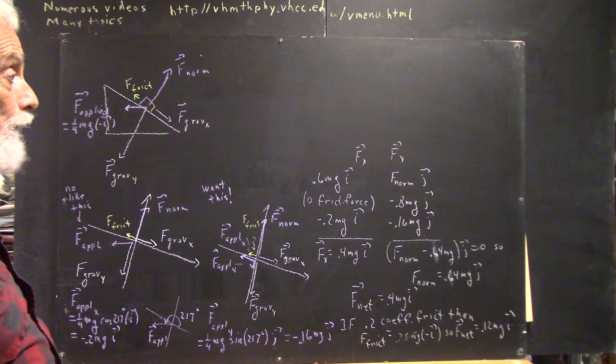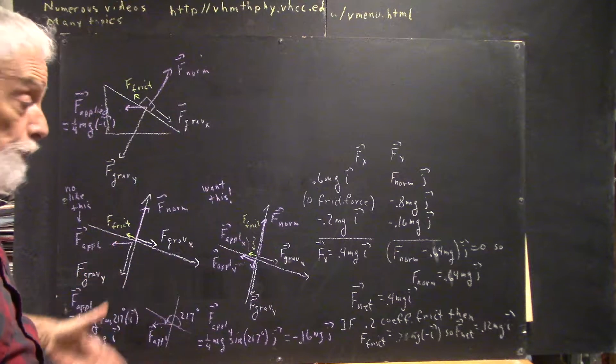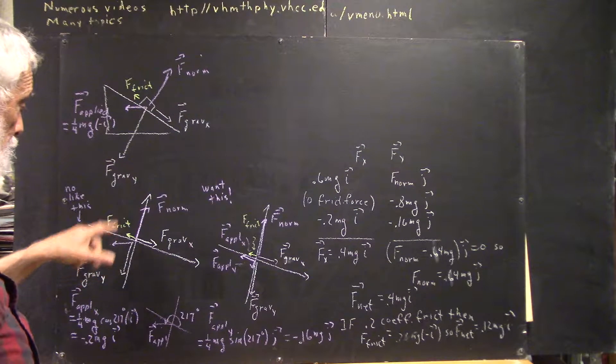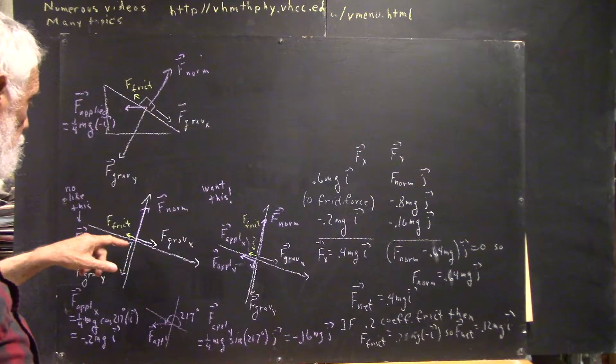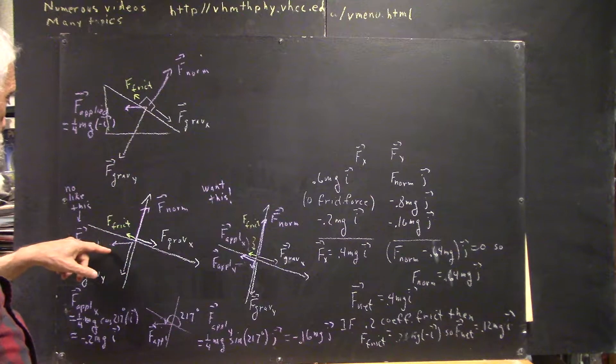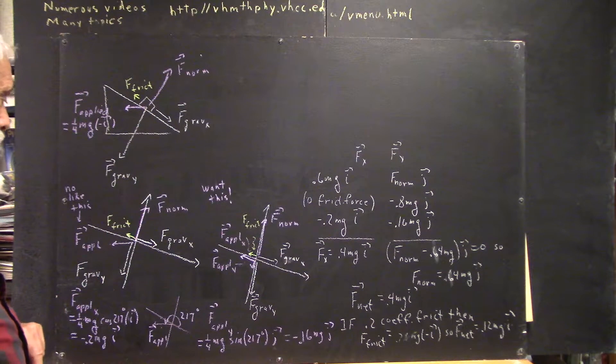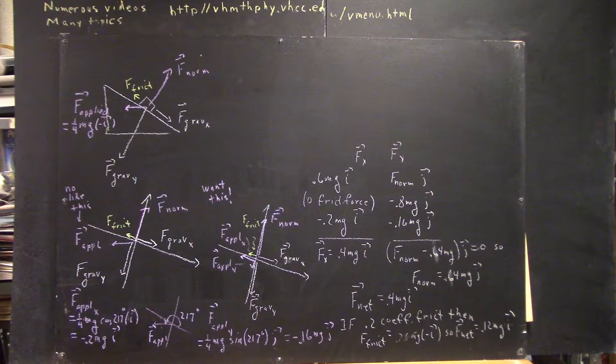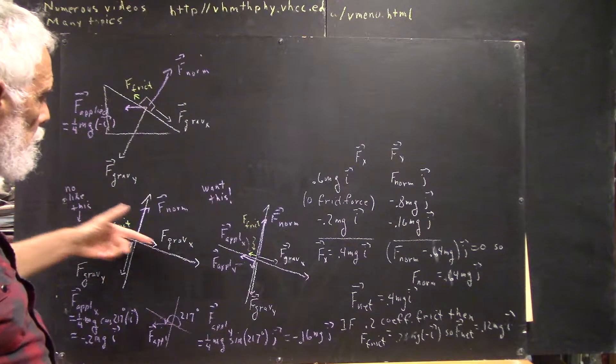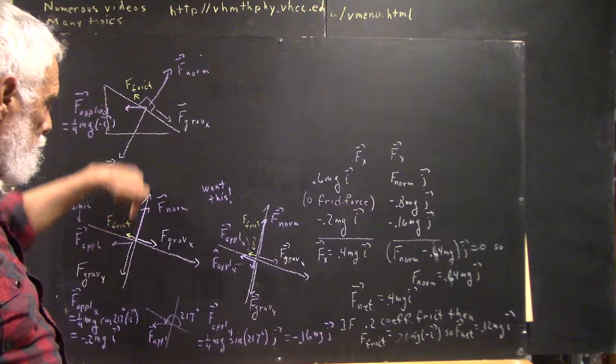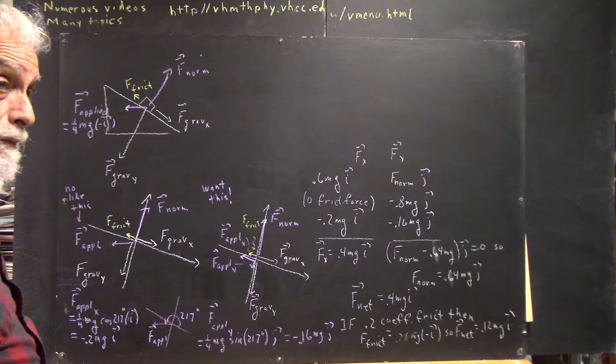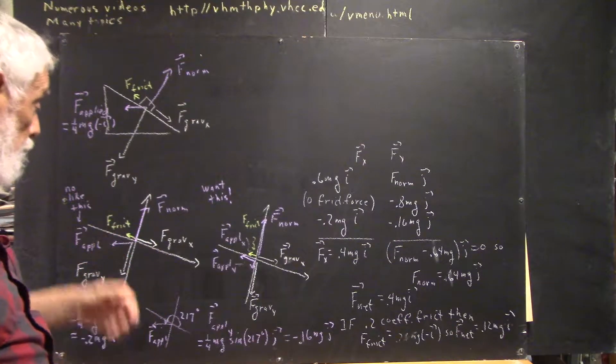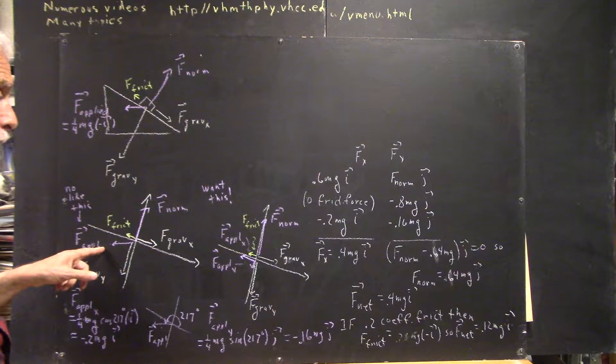So now what does our force diagram look like? It looks just like it did before, except that now we have this applied force. So this is just what we had before, but now in purple here we have represented our applied force. Now what do we notice about this? Well, one obvious thing is all of our vectors are expressed by the components parallel to one or the other of the axes, except for this applied force.